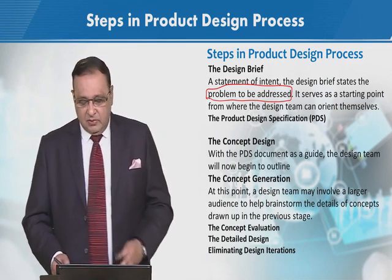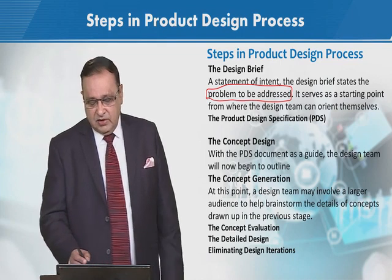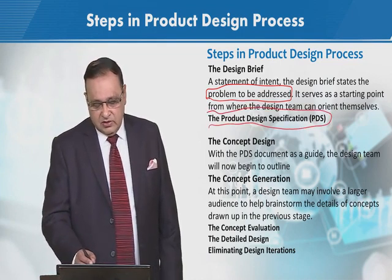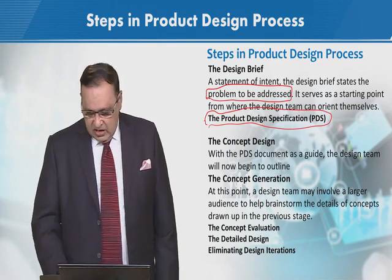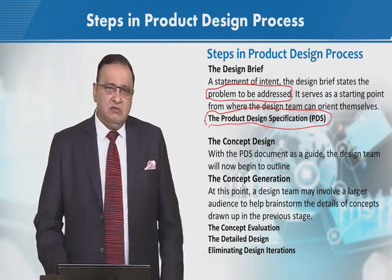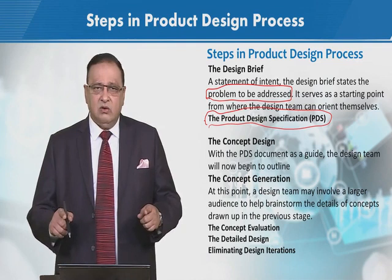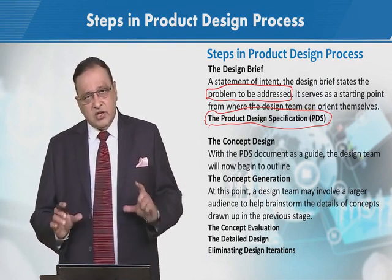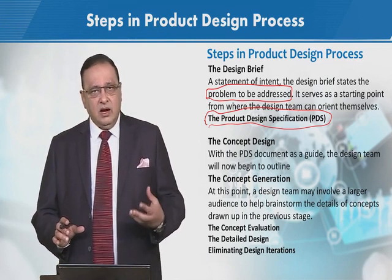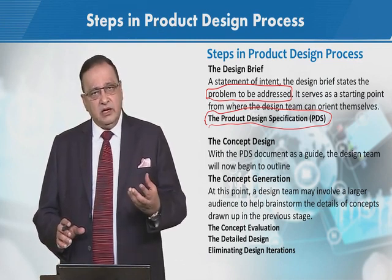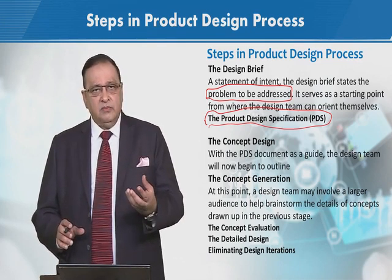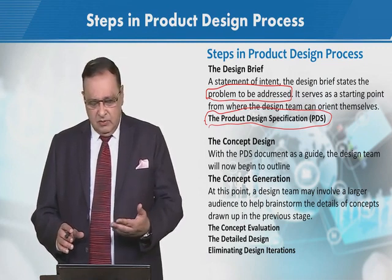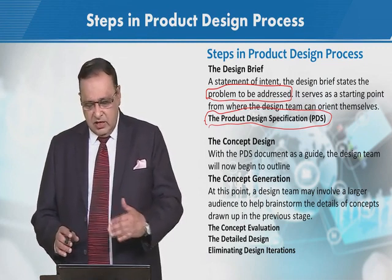Then we move to the next stage which is product design specification. اب ہم اس position میں آگئے ہیں کہ ہم specifications یہاں finalize کر سکتے ہیں. Size کیا ہونا چاہیے، weight کیا ہونا چاہیے، length کیا ہوگی، thickness کتنی ہوگی — یہ specifications اب ہمارے پاس material form میں، tangible form میں، specific form میں آ گئی ہیں. اب ہم یہاں پہ اس stage پہ آگئے ہیں.